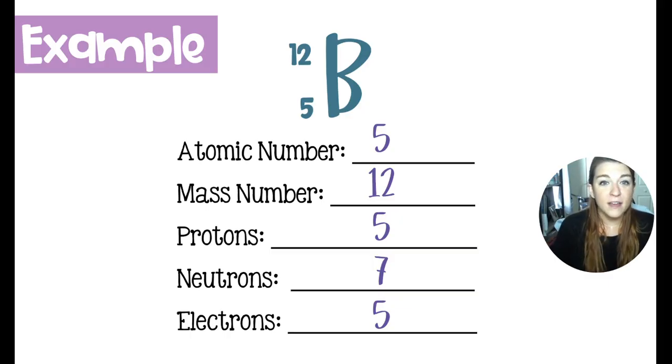The atomic number of boron is five, indicated by its atomic number right here. The mass number is 12 up at the top. This means, the atomic number being five, that we have five protons.